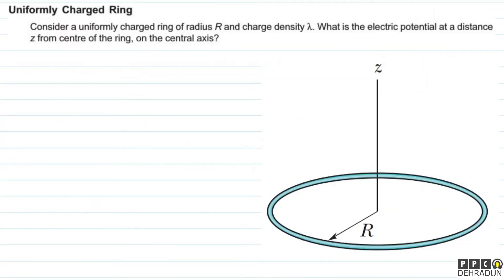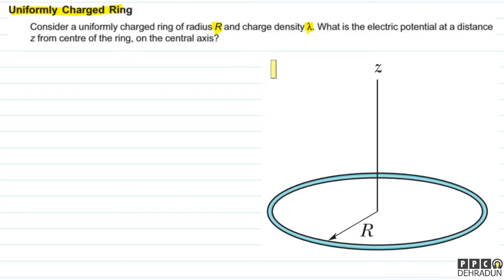Now let's look at the next case — a uniformly charged ring. Here we have a uniformly charged ring of radius R with linear charge density lambda. We need to find the electric potential V at a point P on the central axis at a distance Z from the center of the ring.